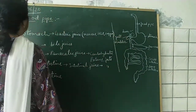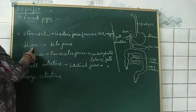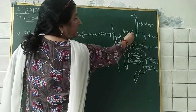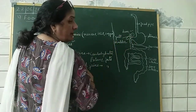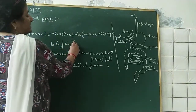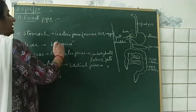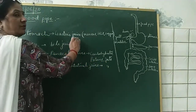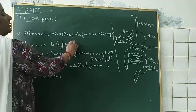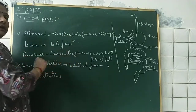The liver is the largest gland in our body. The liver secretes bile juice, which is stored in the gallbladder. The role of bile juice is to emulsify the fat — this means it helps in the digestion of fats. It also makes the food alkaline, because pancreatic juice acts in an alkaline medium only.